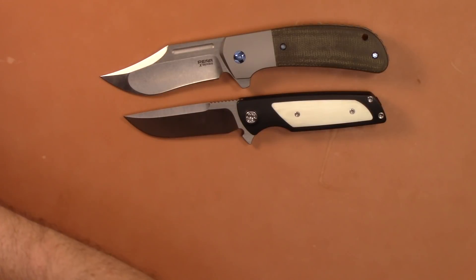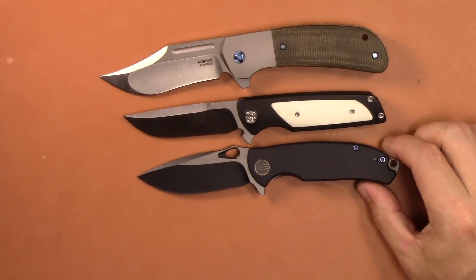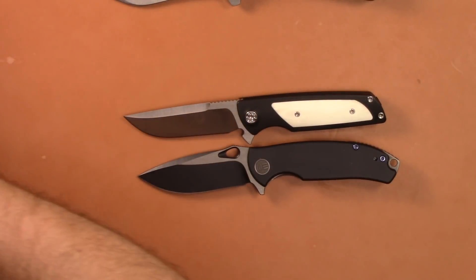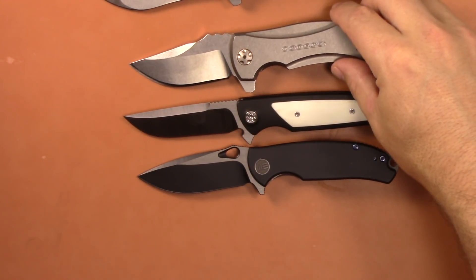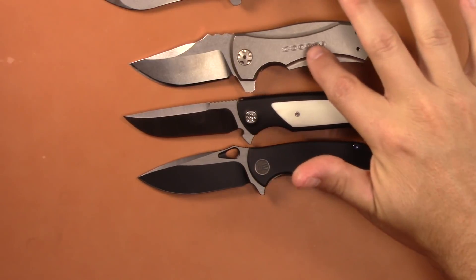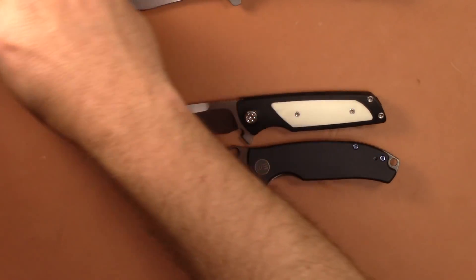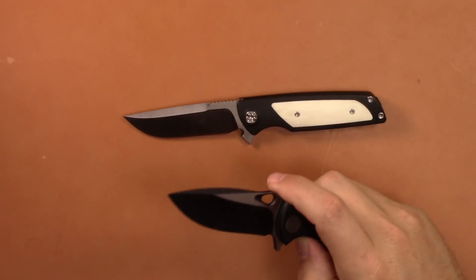While I've got this out we'll do some size comparisons. The WE Knife Rectifier, very similar size knife. Let's move that up. I think the ZT 0900 is going to be probably the closest. The Rectifier is just a touch bigger. The 0900 is just about there.